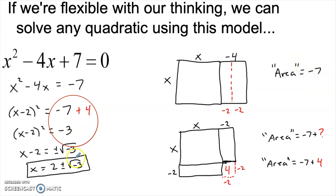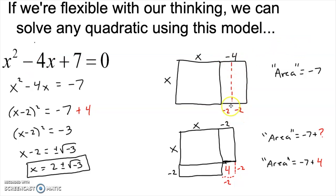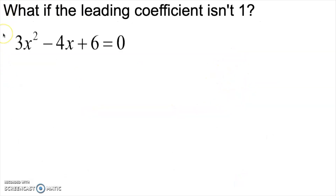Up until now, I've kept it simple by doing two things. The first thing I did was I kept this number an even number — that's the number that we're always going to be splitting in half over here. Now if that's not an even number, it's fine. You just end up with a fraction. You divide it by 2, and if this was a 5, you would have 5 halves and 5 halves, or you could use 2.5 if you like decimals. The other thing that can happen is this number in the front could be something other than 1. What if we have something like this, where there's 3x squared?